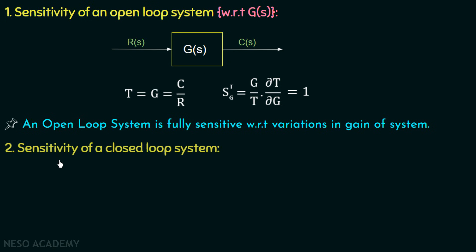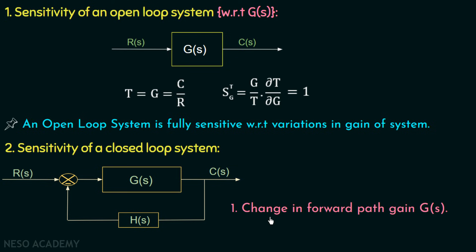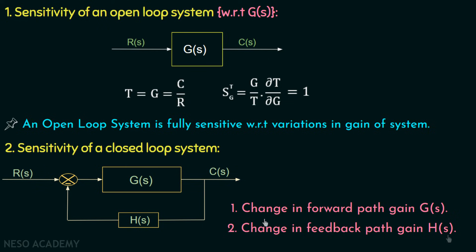We will now move on to the sensitivity of a closed loop system. In a closed loop system, G(s) is the forward path gain and H(s) is the feedback path gain, R(s) is the reference input, and C(s) is the controlled output. Since we have two blocks, we study sensitivity with respect to two different parameters: S_T^G, the sensitivity with respect to change in forward path gain, and S_T^H, the sensitivity with respect to change in feedback path gain. We will derive the expressions for S_T^G and S_T^H in the upcoming lectures.